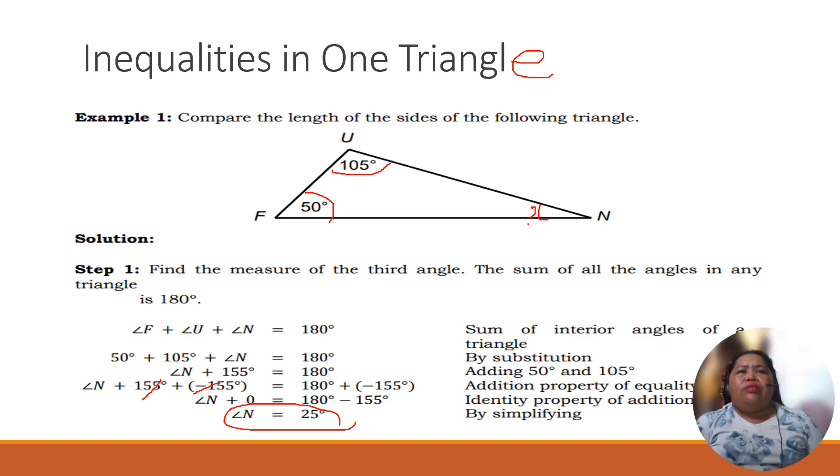So how are we going to do this? First, we have the sum of the angles of the triangle. And then second, we get the substitution. And then we add 50 and 105. Then of course, we use the addition property of equality. And then identify property of addition. And then simplifying is the last. So we have to simplify.